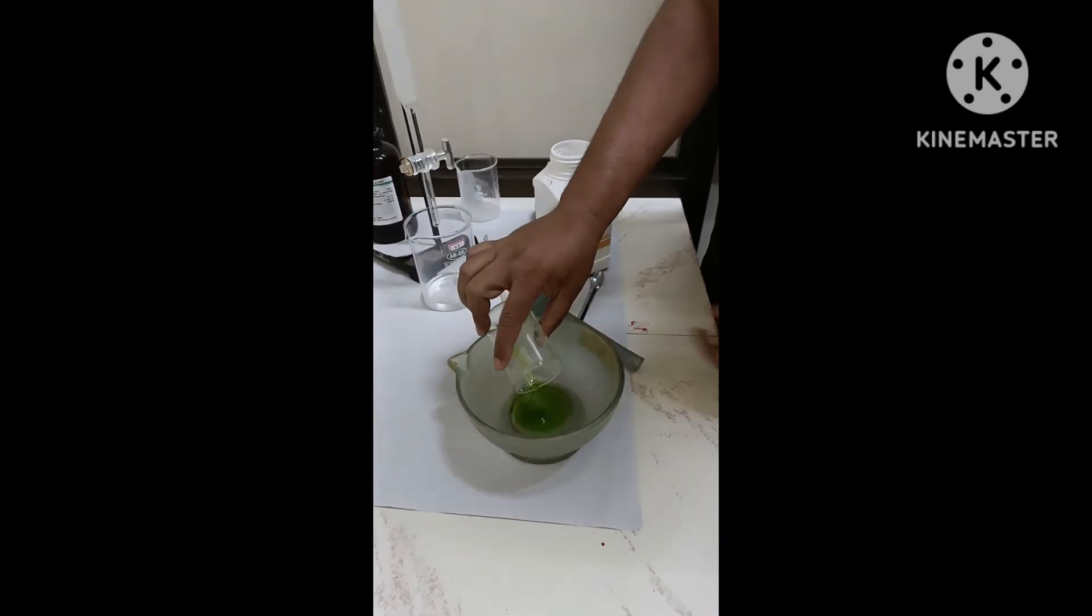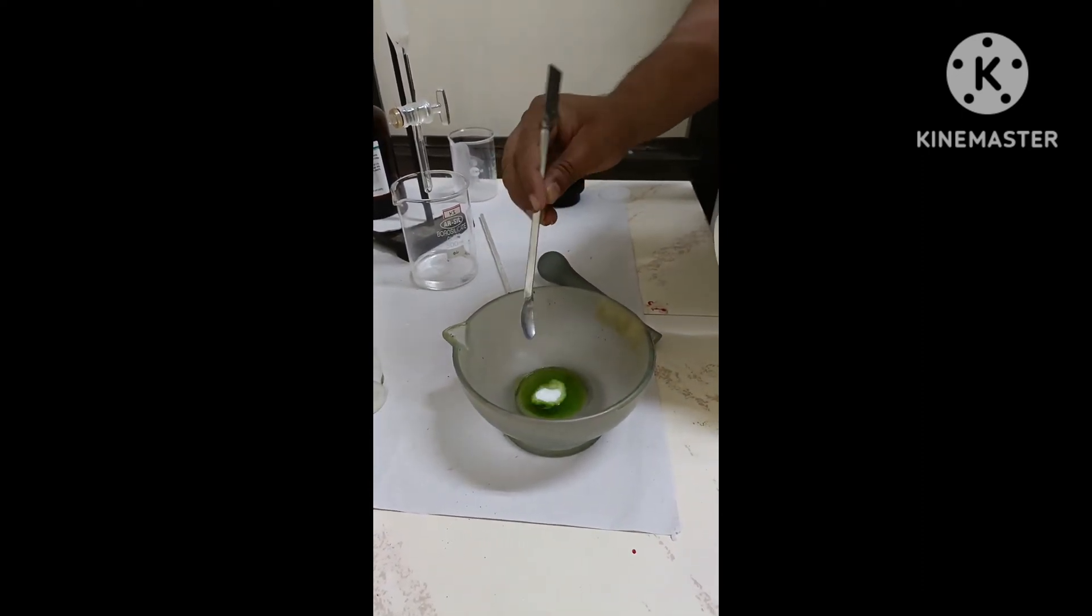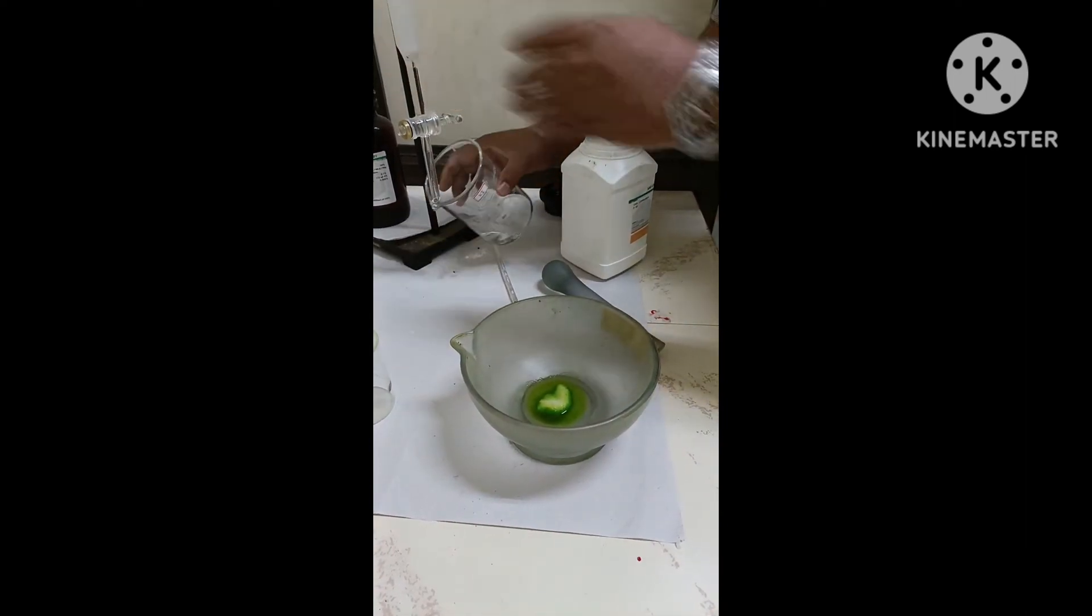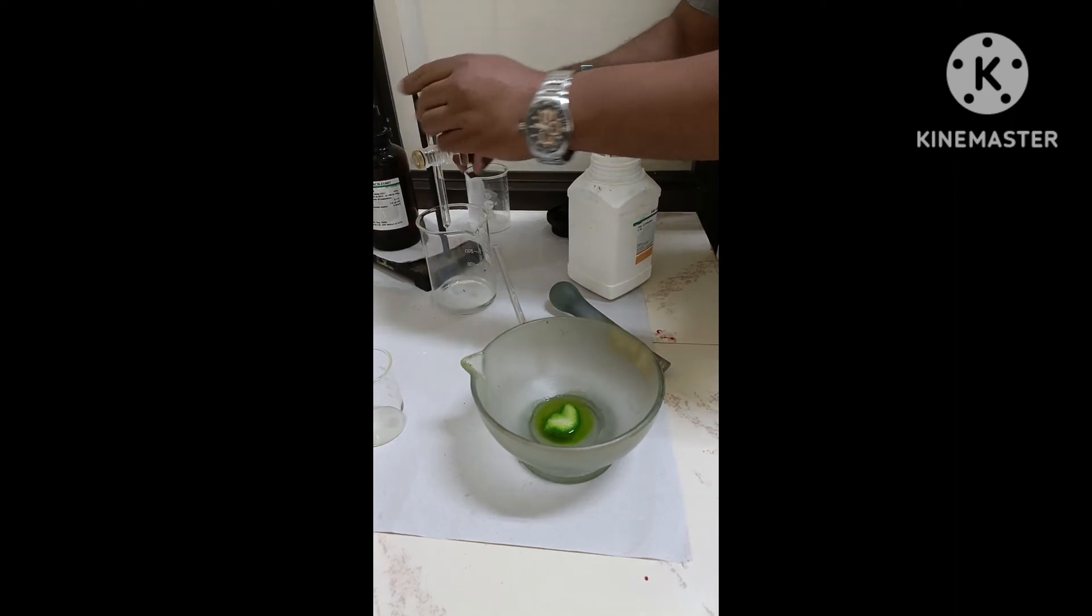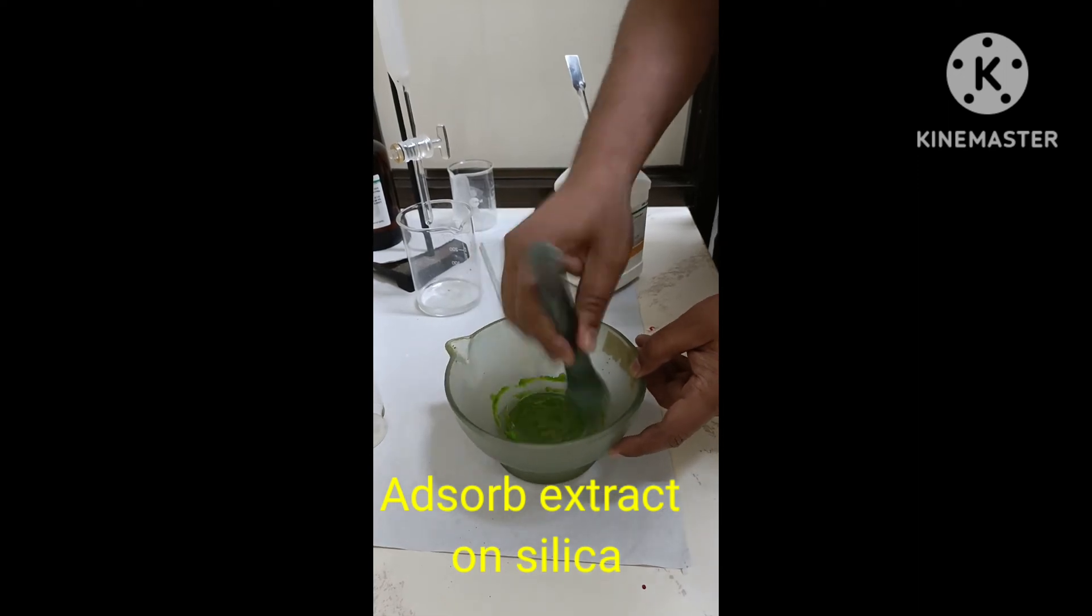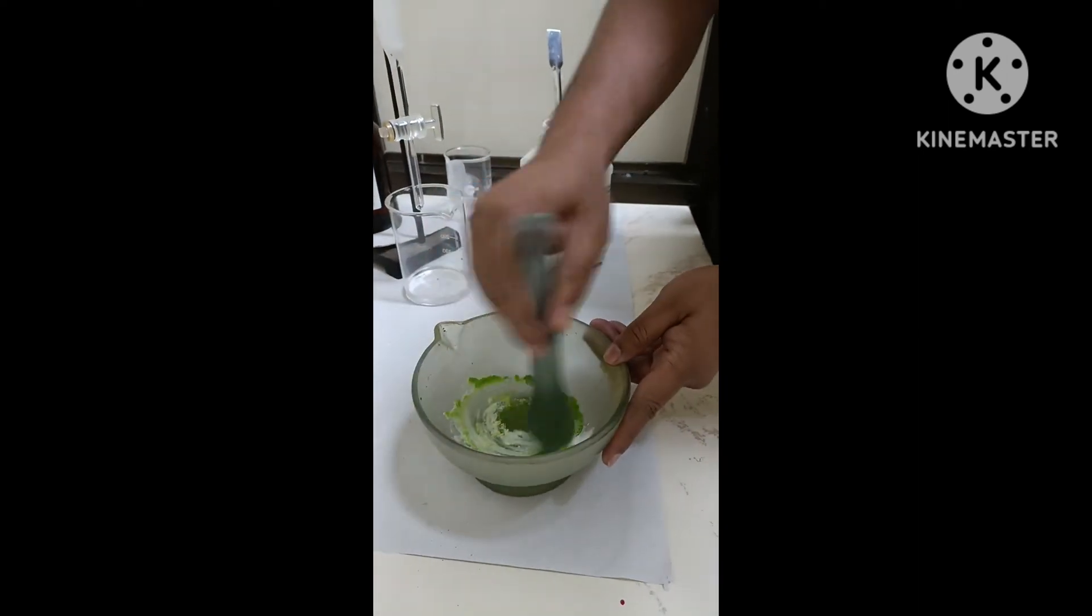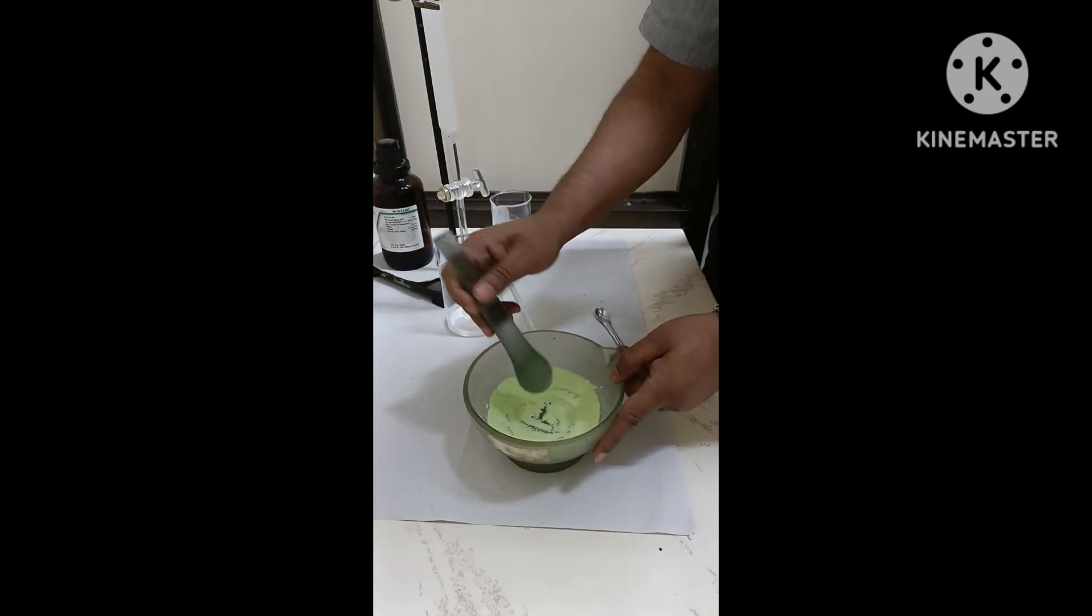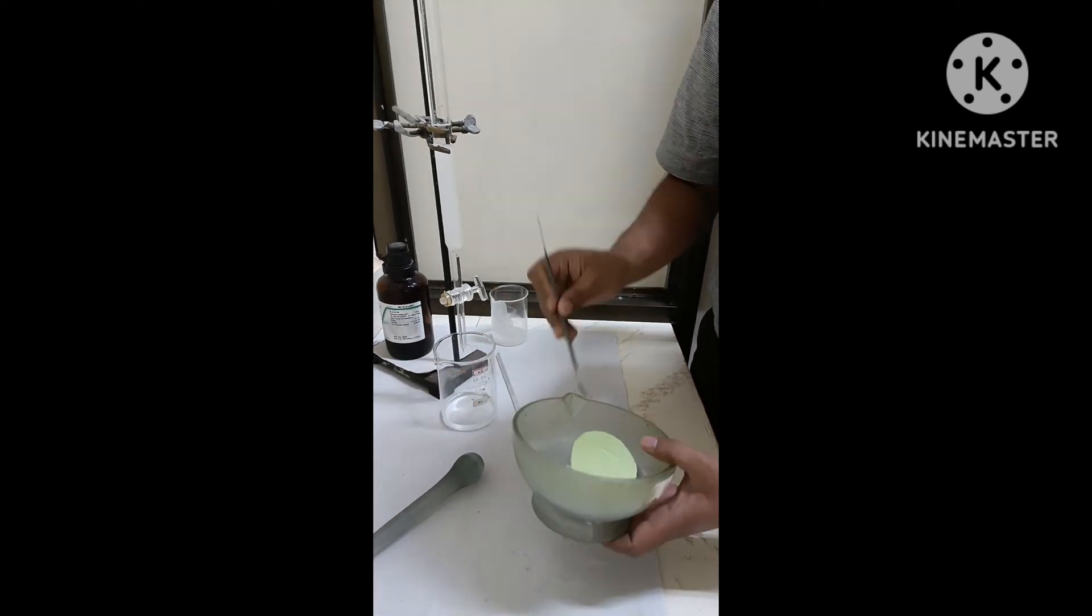We can filter out and then you can see what we got is the extract which is free from moisture. Now, what we need to do is adsorb this extract on the silica, so we added a little amount of silica into that. Sometimes some people prefer to directly use the liquid sample and sample is loaded using the liquid form. But it is always better to adsorb that on the silica so that when you load the column with the sample, it will not disturb the packing. This is how we can adsorb.